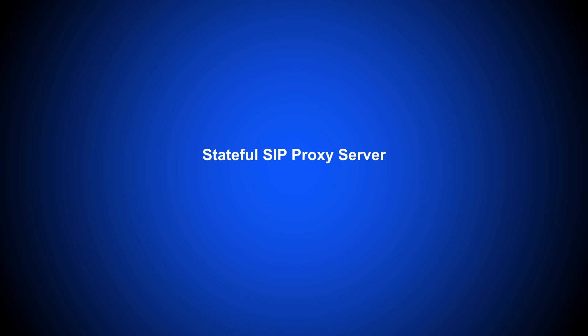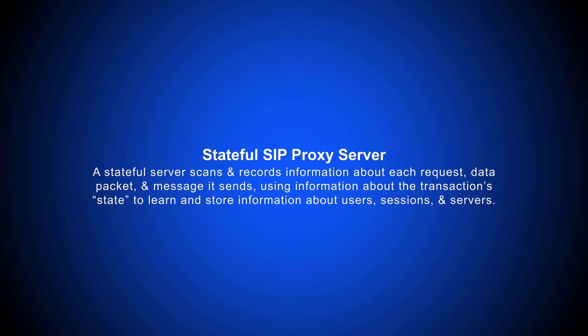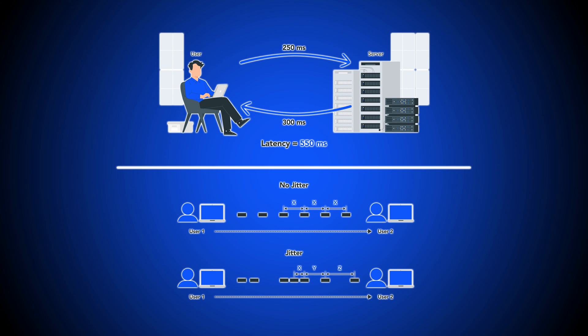Stateless proxies demand less memory and CPU than stateful proxies, and they can quickly transmit many data requests. A stateful proxy scans and records information about each request, data packet, and message it sends, using information about the transaction state to learn and store information about users, sessions, and servers. This provides quicker and better data for subsequent actions, enabling users to revisit transaction histories in case there's an issue with packet delivery or a call quality issue like latency or jitter.